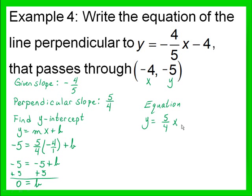So our equation is y equals 5 over 4x. And since it's plus 0, we don't need to write plus 0, though you can if you wish. And there's our equation.